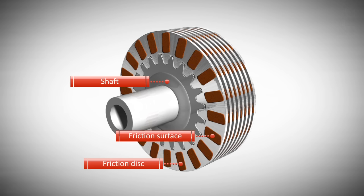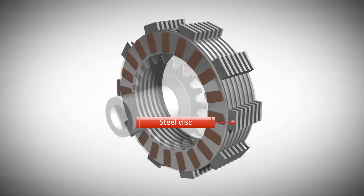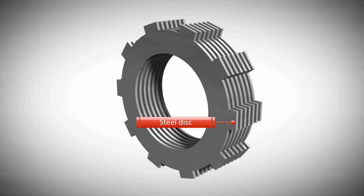sintered bronze, or graphite. Steel disks can be found between the friction disks. These steel disks sit interlocked within the basket.